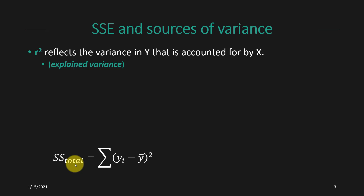If we wanted to turn this into a variance, we divide the sum of squared errors by n minus 1, and if we wanted to turn that into a standard deviation we would take the square root. But we're going to stop short of calculating the variance and the standard deviation right now and just focus on the sum of squared errors, because r-squared reflects the proportion of that sum of squared errors that is accounted for by the x variable.